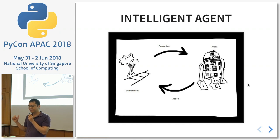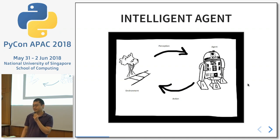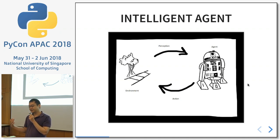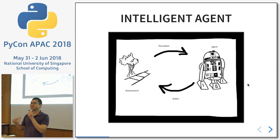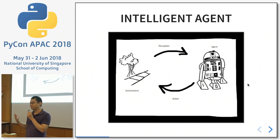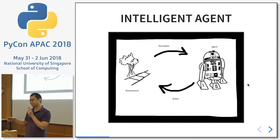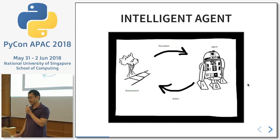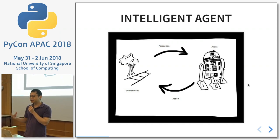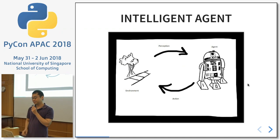One of the models we have for this kind of agent is the standard observe-perception model, where the agent acts on the perception and affects the environment. This is also how people work, except robots do this very fast — many times a second. So how can we use this model and teach it in class?